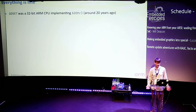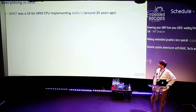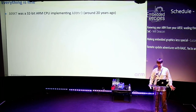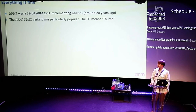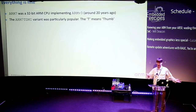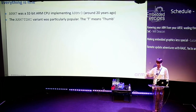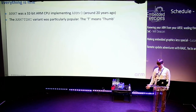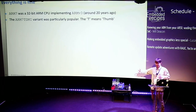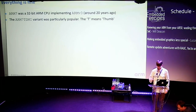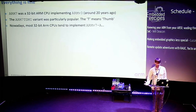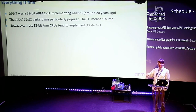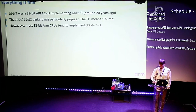So first, Arm7 - who here has heard of Arm7? It's a 32-bit Arm CPU, quite old, about 20 years old, and it implements ARMv3. So you've got Arm7 implementing ARMv3 - what happened to the 4 in the middle? The really popular version is the Arm7TDMI, the in-joker at Arm is that that pays your wages, not the fancy stuff. The T means Thumb - keep that in mind because Thumb will come up again. Most 32-bit Arm CPUs nowadays tend to implement ARMv7A.